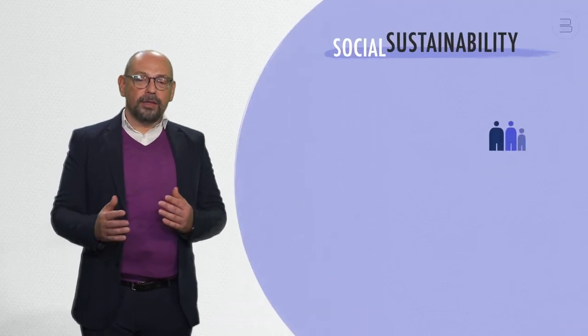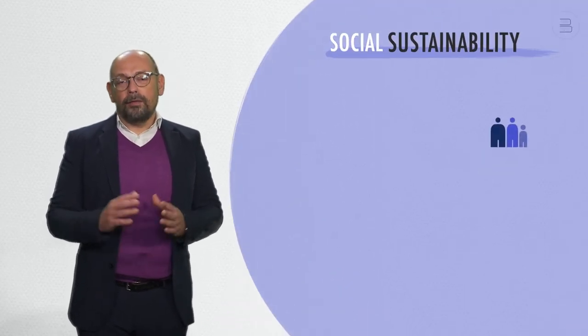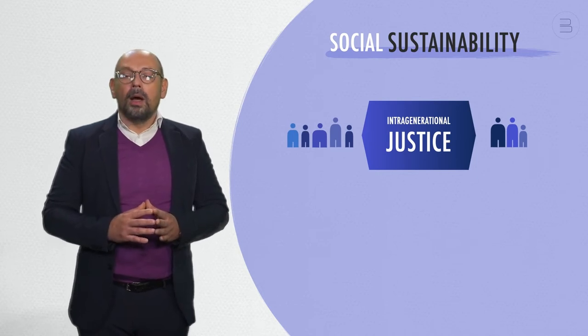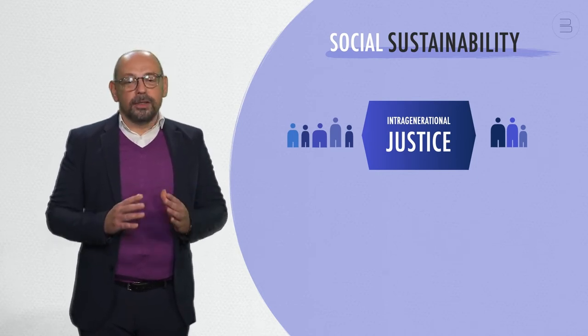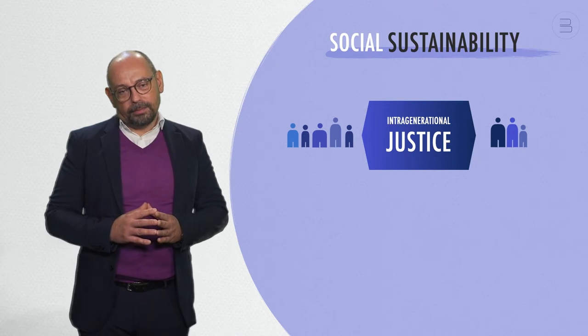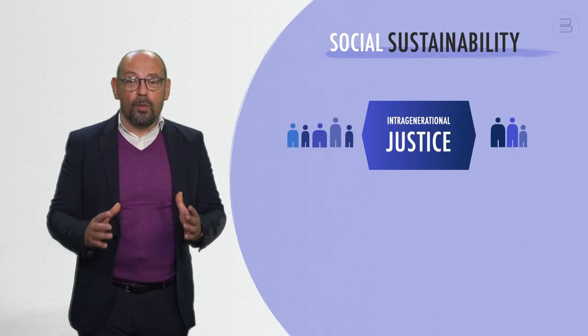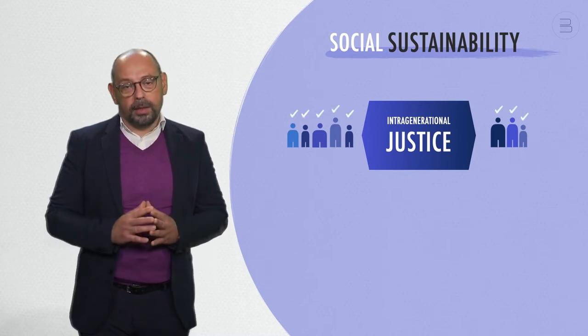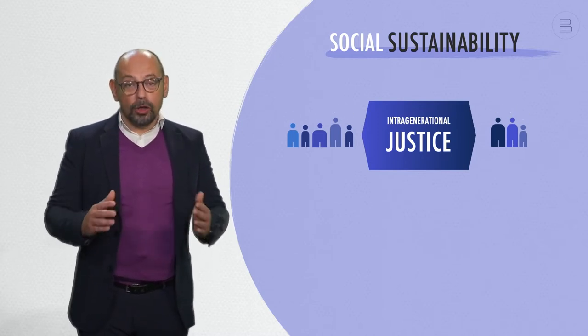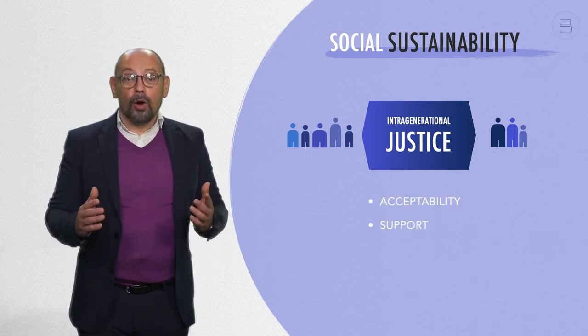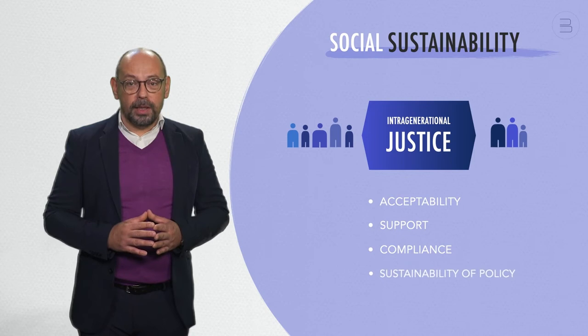Social sustainability relies very much on the idea of intragenerational justice we talked about a while ago. This is because justice underscores social sustainability. Apart from the moral imperative of providing everyone with basic human rights, justice also helps with acceptability, support, compliance and sustainability of policy.